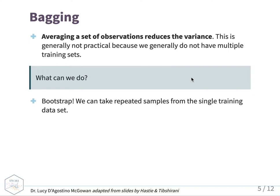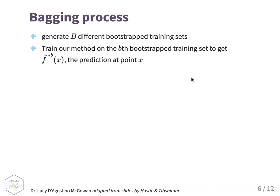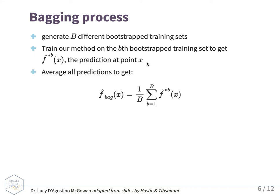So what can we do? We can bootstrap — using techniques we've talked about already. We can take repeated samples from a single training dataset. In the bagging process, you generate B different bootstrapped training sets from that single training dataset. You then train your method on each B-th bootstrap training set to get predictions F-hat-star at a point X, and then average all of the predictions to get F-hat-bag — the average bagged prediction, which is 1 over B times the sum from b equals 1 to B of these different predictions.